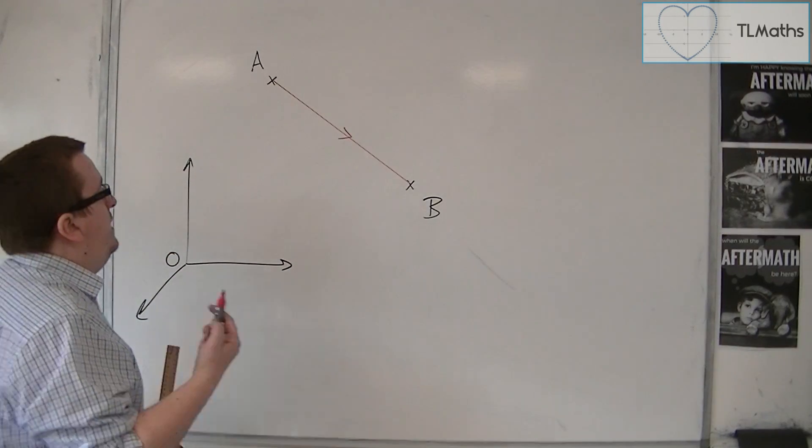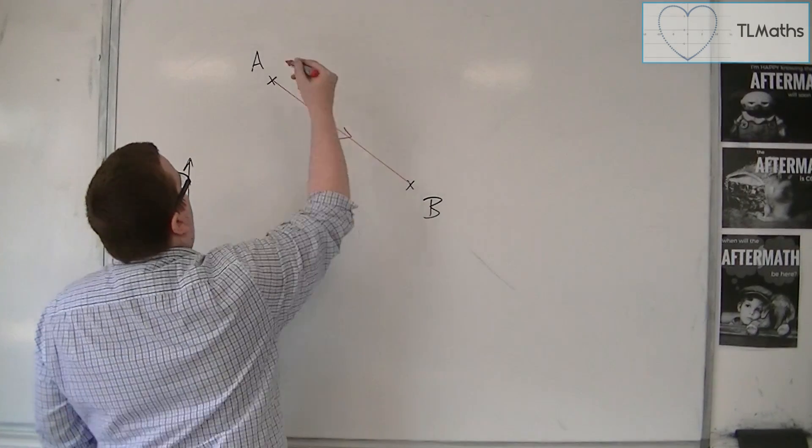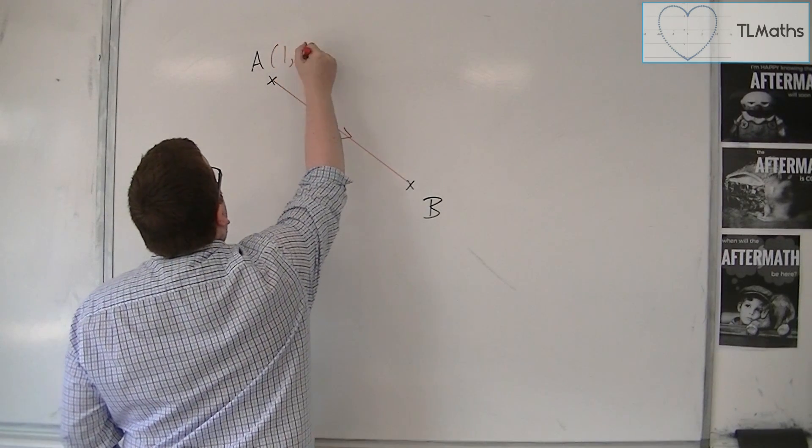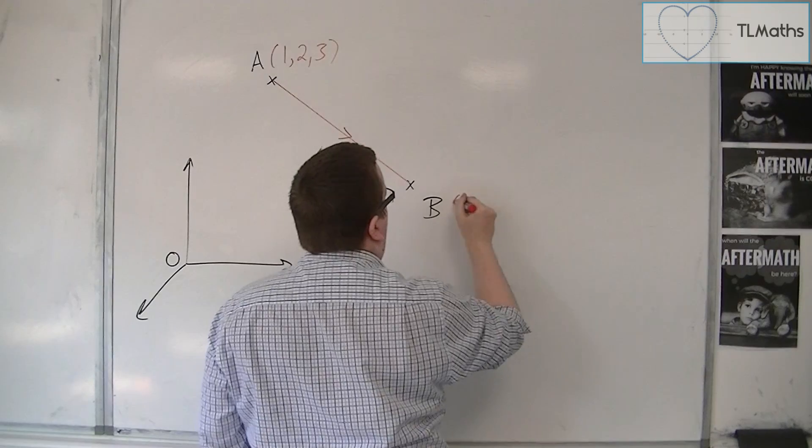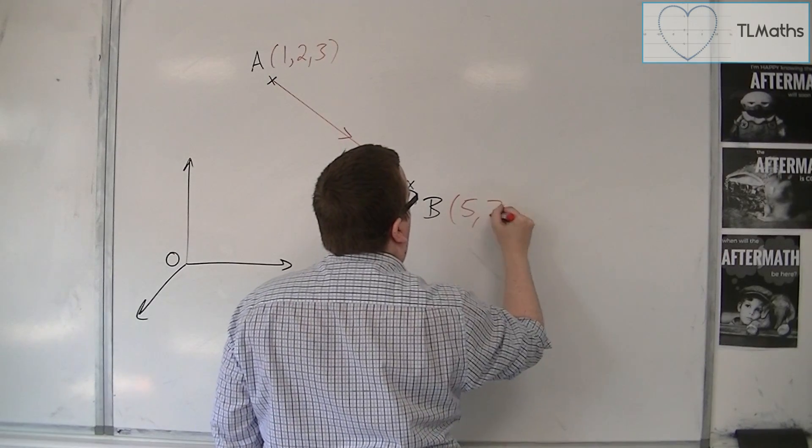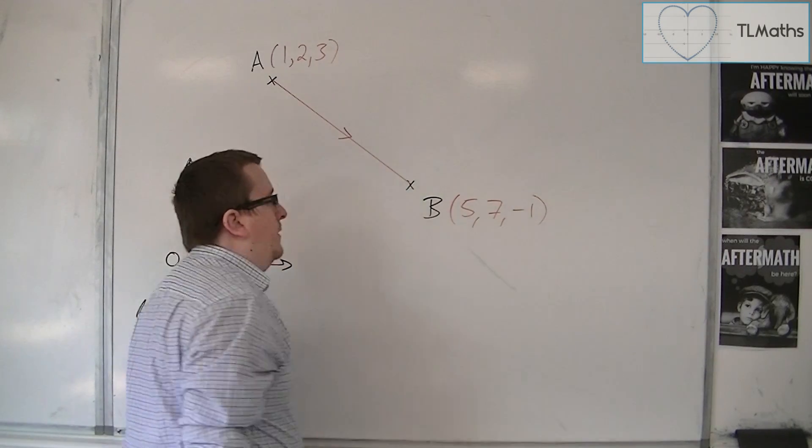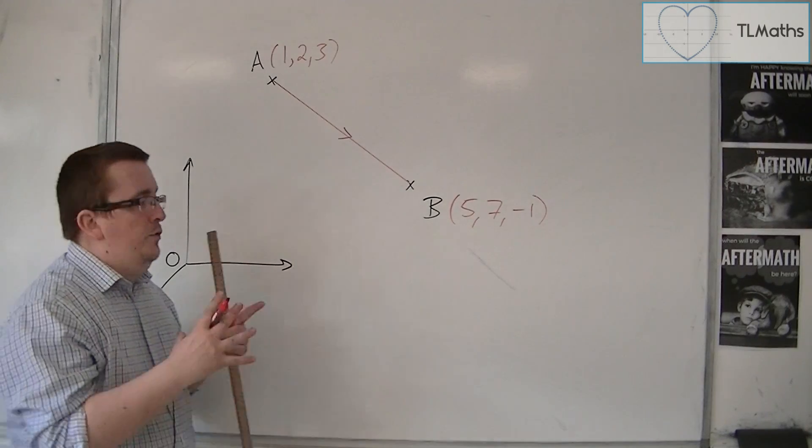So if I know the coordinates of A and B, so let's say that this is 1, 2, 3, and this is 5, 7, minus 1. Okay, if I know the two coordinates...